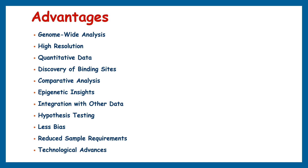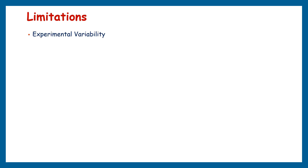Besides all its advantages, ChIP sequencing has some limitations. ChIP sequencing experiments can be sensitive to experimental variations such as differences in antibody specificity, cross-linking efficiency, and sample preparation techniques. These variations can introduce noise and affect the reproducibility of results. The success of ChIP sequencing also heavily relies on the specificity of the antibodies used to pull down the protein of interest; non-specific binding or antibody cross-reactivity can lead to inaccurate results.